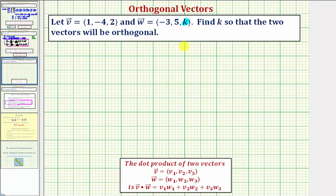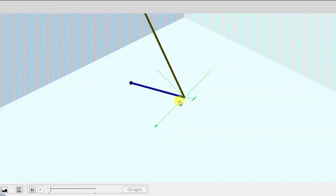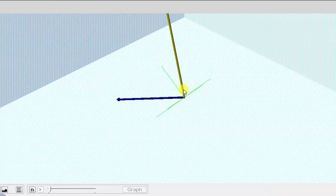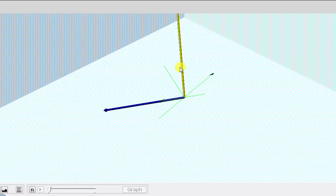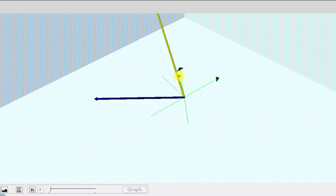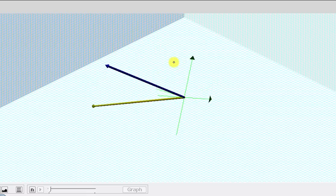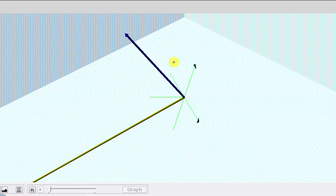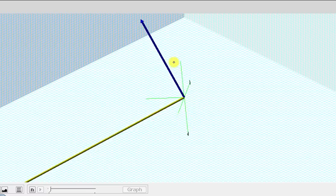To solve this problem, we'll use the dot product of two vectors. But before we set this up, let's look at this graphically. Vector v is graphed in blue, and the yellow vector is orthogonal to the blue vector. This yellow vector is vector w, and we're trying to find the z component of this vector, which would be the value of k.